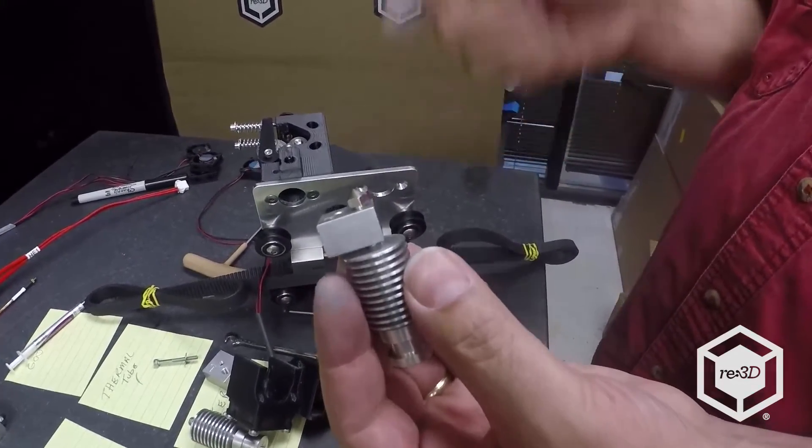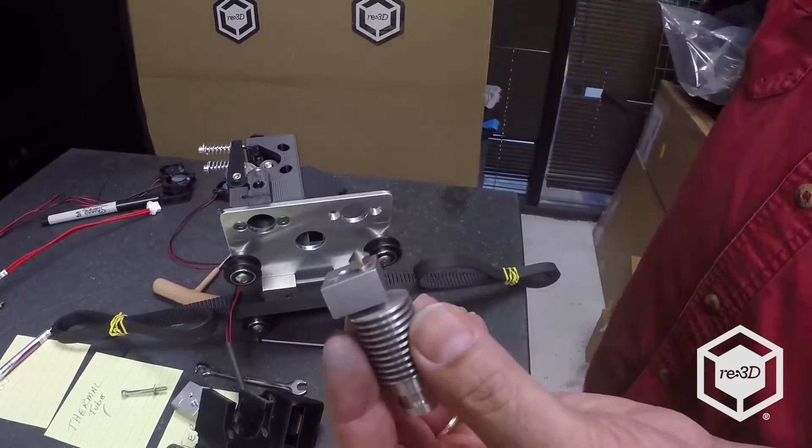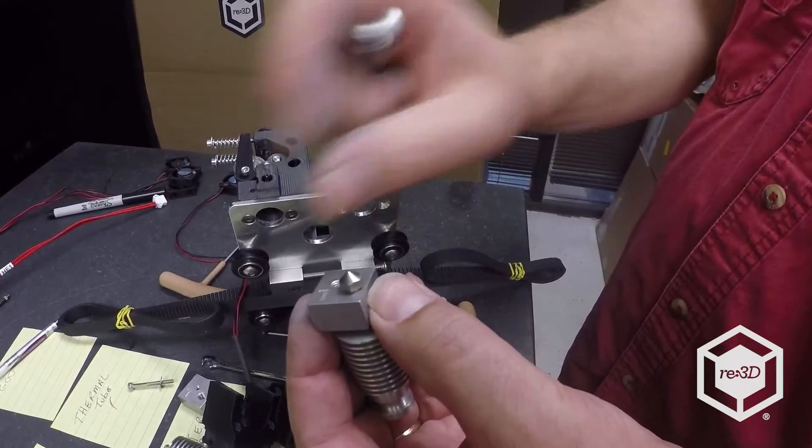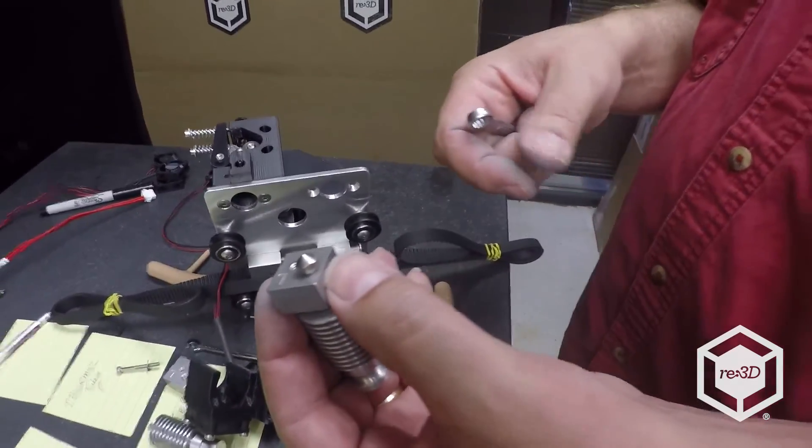You can also do that nozzle swap on the bot. You don't want to take anything apart. You just reach in with your wrench, pull it out. Again, careful not to let these things spin. Put the new one in and you're off and running.